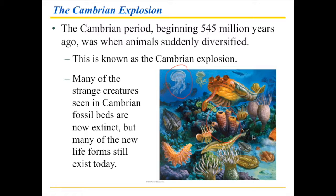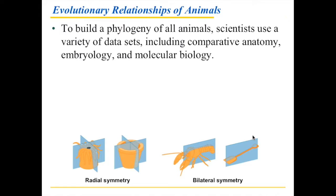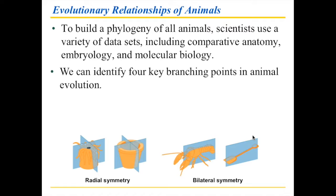It's really interesting when you look at all the major phyla — the diversity of life that exists today — most of them go way back to the Cambrian, and we have fossil species that are just like that. When it comes to figuring out how animals are related based on that initial explosion, you use a variety of data sets. Nowadays we can use molecular data sets, but they are sometimes confusing. It does help to look at comparative anatomy and embryology, both of which were key factors in how we learned about evolution. In this situation, we're going to look at four key branching points in animal evolution.